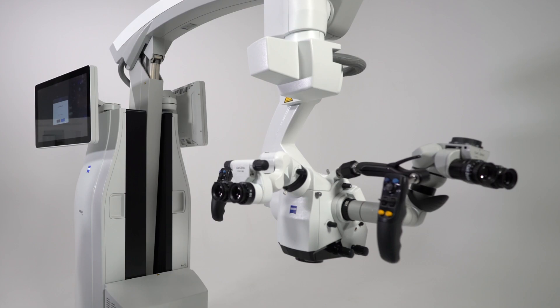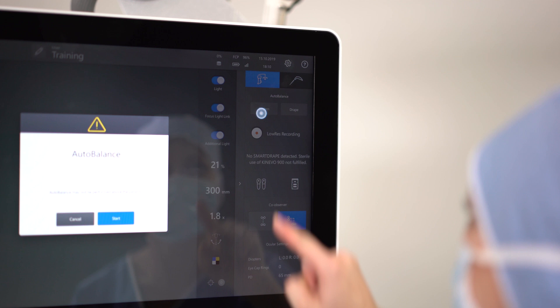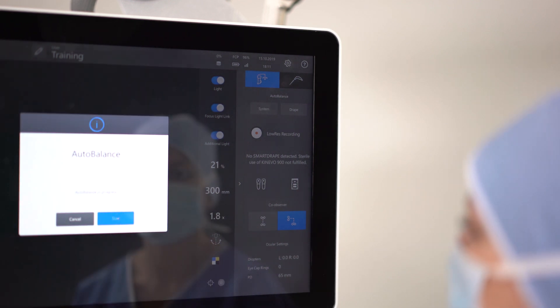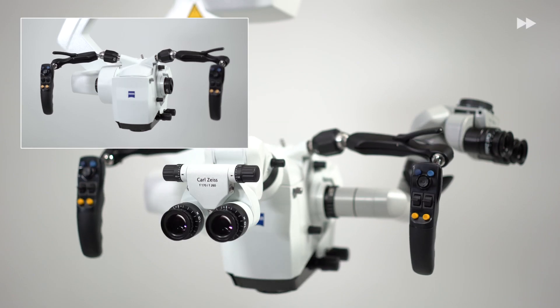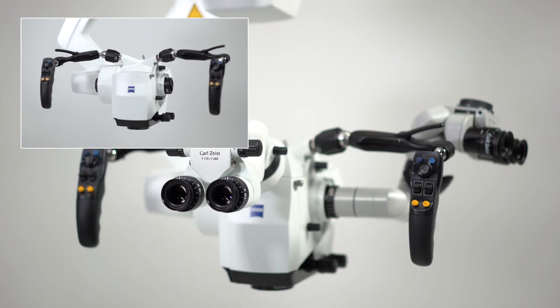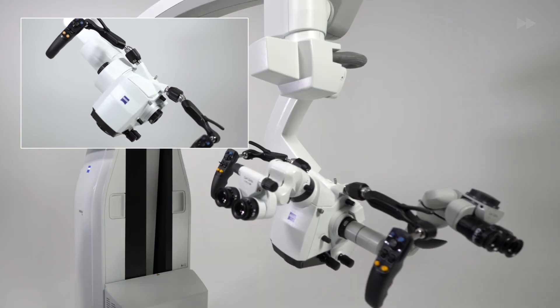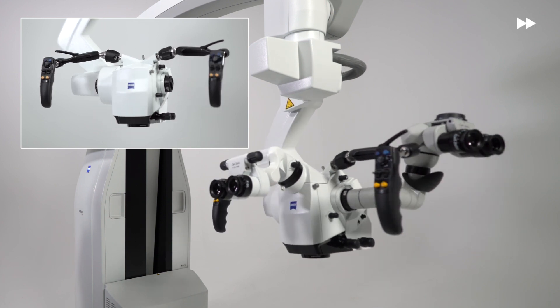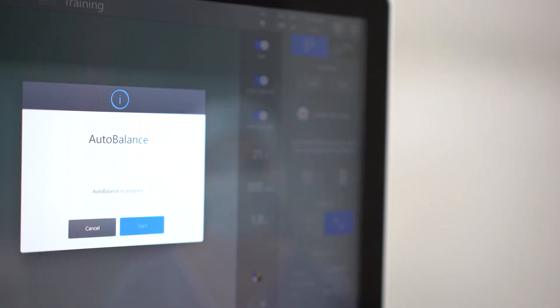Ensure the Zeiss Kenevo 900 is balanced. To start the balancing, simply press the button Auto Balance System on the user interface. The device balances itself along all microscope and stand axes, enabling easy movement during the surgery. To finish Auto Balance System, press Done.